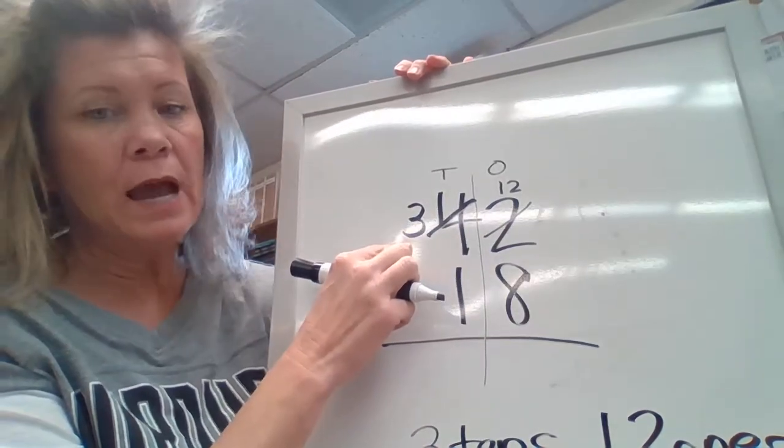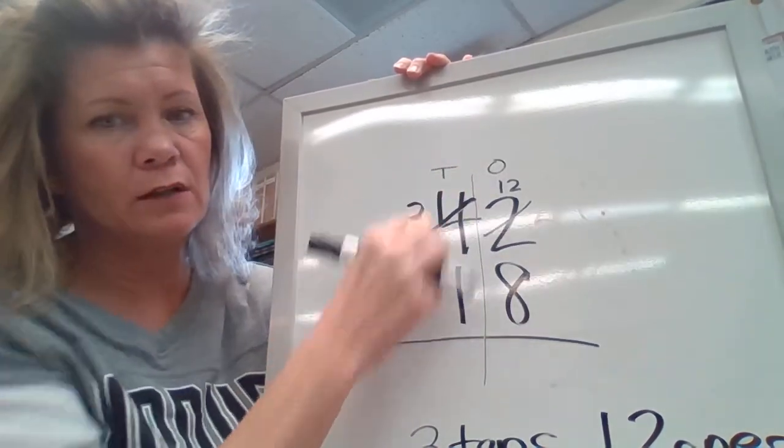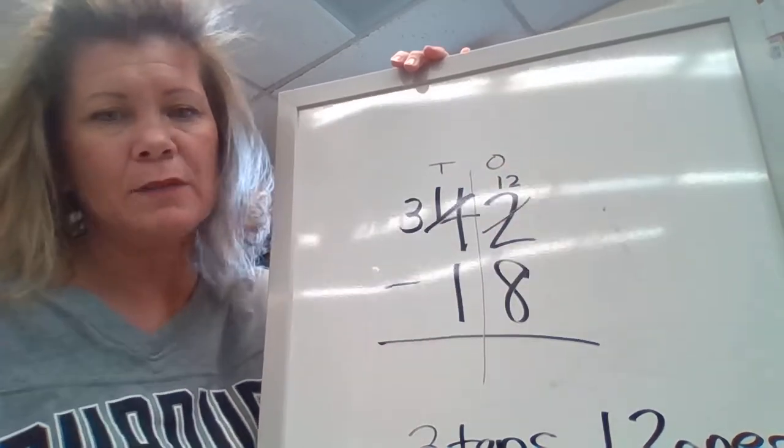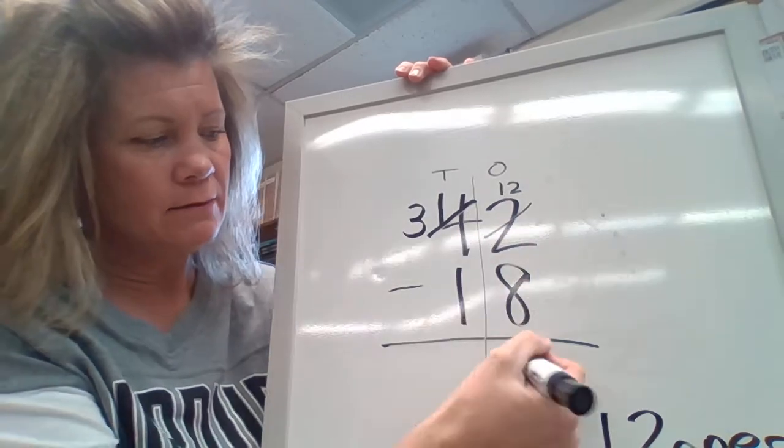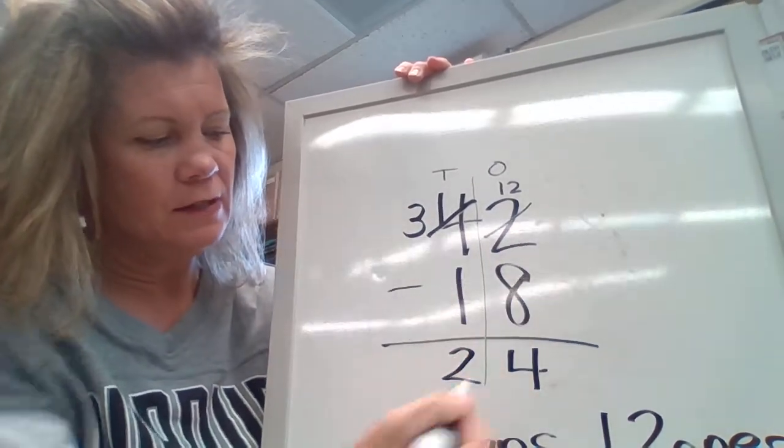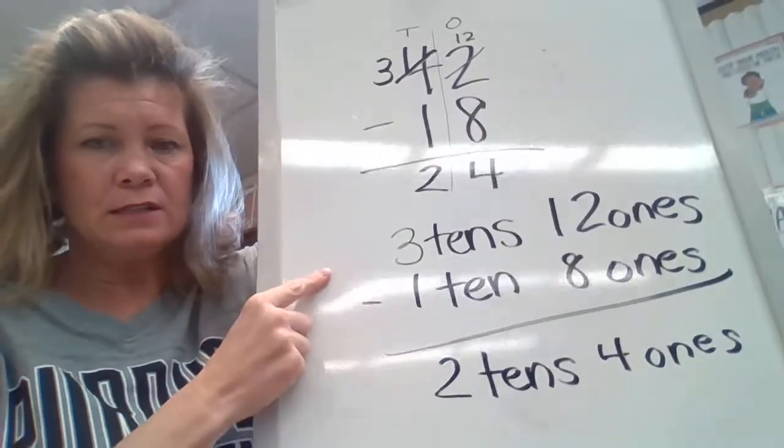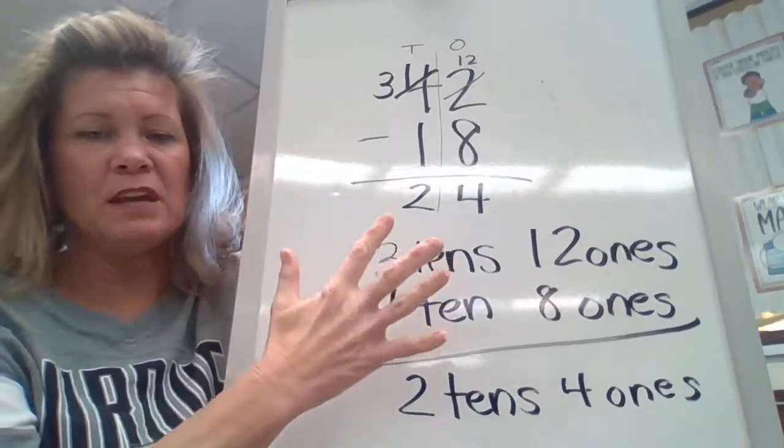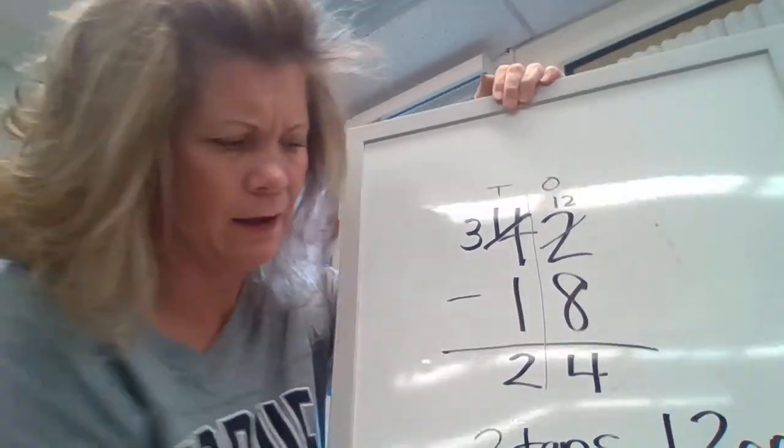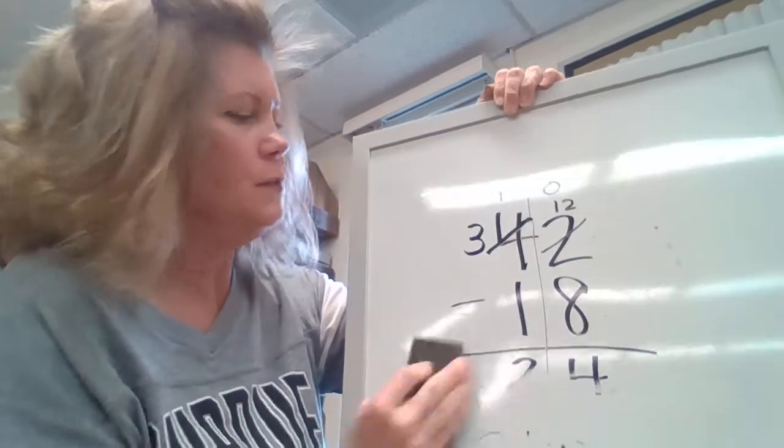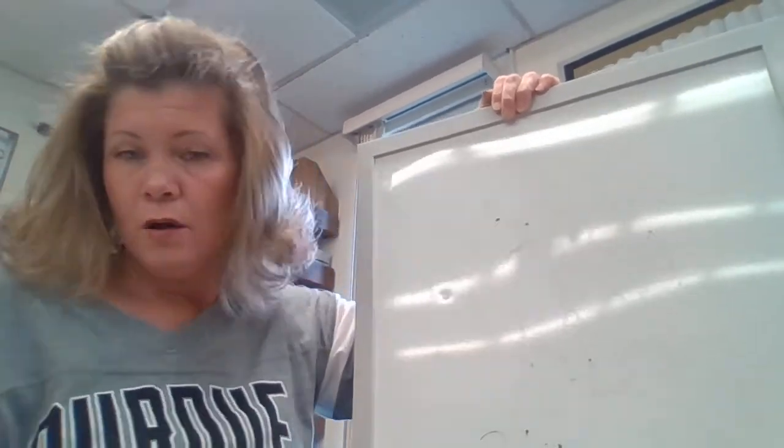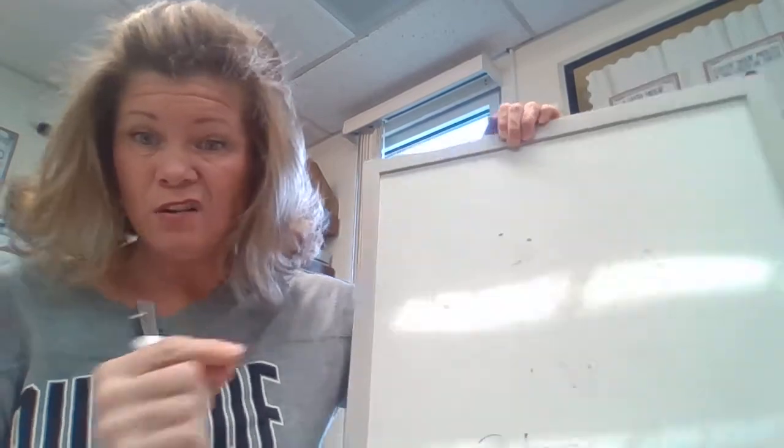So I cross out the four and I make it a three. I know it's three tens because I'm in the tens column. Then I cross out the two and I make it 12. And I know it's 12 ones because I'm in the ones column. Now I can just real quick subtract. 12 minus eight is four. And three minus one is two. I get the exact same answer. So this and this are exactly the same, except you don't have to write out all these words. That takes too long. You guys don't have time for that. Ain't nobody got time for that. So the old fashioned way is very much like it. Only you just shorten it and go a little bit quicker.